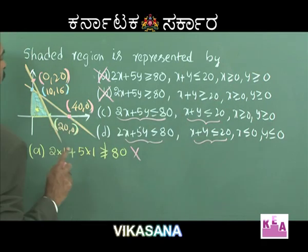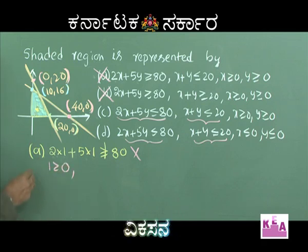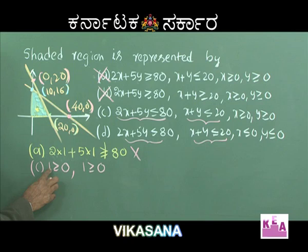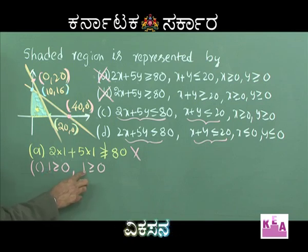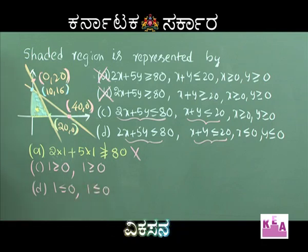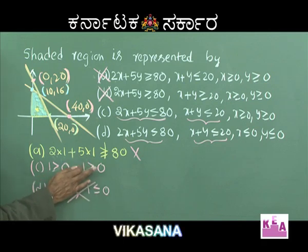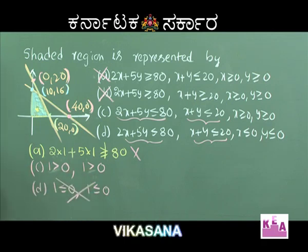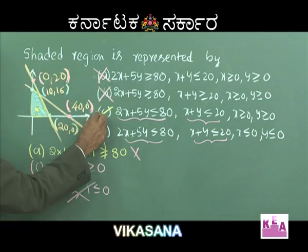The conditions x ≥ 0 and y ≥ 0 apply. Substituting (1,1): 1 ≥ 0 is true. Option D is completely ruled out. Since 1 ≥ 0 is true — note we say 'one is greater than or equal to zero,' not 'one equals zero' — that clearly shows only Option C is correct.